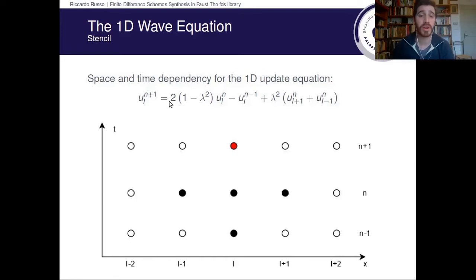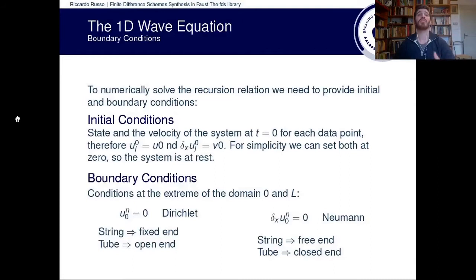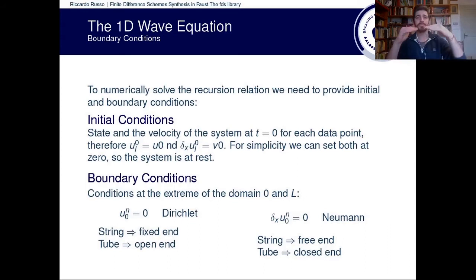Here is a graphical example of the time and space dependency for the relation we obtained. To get the state of u(n+1), what we need is the current state of point l, the current state of the two neighbors l-1 and l+1, and the past state of l. You might ask: how do I know the current and previous steps? We decide them — this is called setting the initial conditions. To make things simple, we set everything to zero: when we start the simulation, we set all data points for the current and previous time steps to zero.